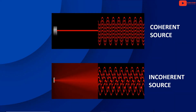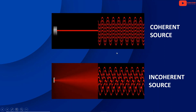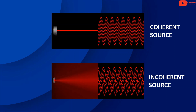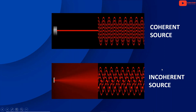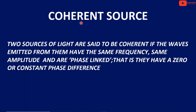What is a coherent source? Same amplitude, same frequency, and constant phase difference is called a coherent source. Two sources of light are said to be coherent if the waves emitted from them have the same amplitude, same frequency, and are phase-linked — that is, they have a zero or constant phase difference.